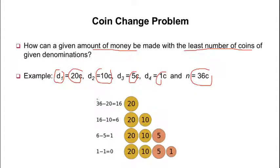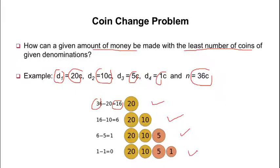For the amount of 36 cents, we take the highest denomination: 20 cent. 36 minus 20 leaves 16 cents. Then the next highest is 10 cent: 16 minus 10 leaves 6 cents. Then 5 cent: 6 minus 5 leaves 1 cent. Then 1 cent: 1 minus 1 is 0. So we have 1 coin of 20 cent, 1 coin of 10 cent, 1 coin of 5 cent, and 1 coin of 1 cent — only 4 coins total.